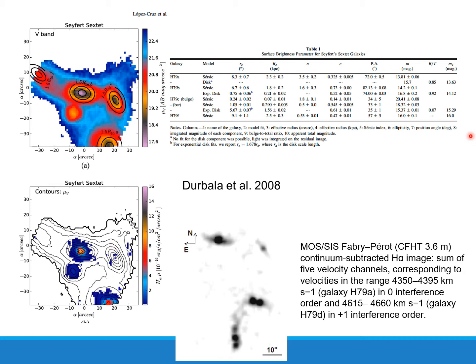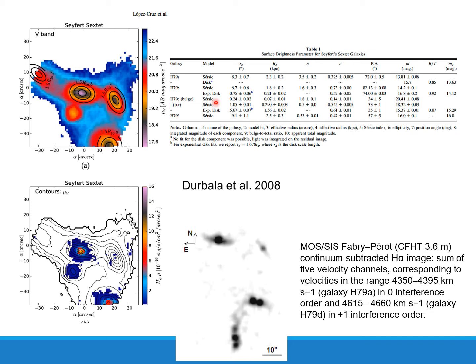From the definitions given above, we can calculate the velocity dispersion as the standard deviation of the redshift velocities of each galaxy. We calculated that for five members: the velocity dispersion is 160 km/s. The error is large given only five members. But we can calculate the first turnaround radius, which is 1600 kiloparsecs, and the second turnaround radius is 530 kiloparsecs.